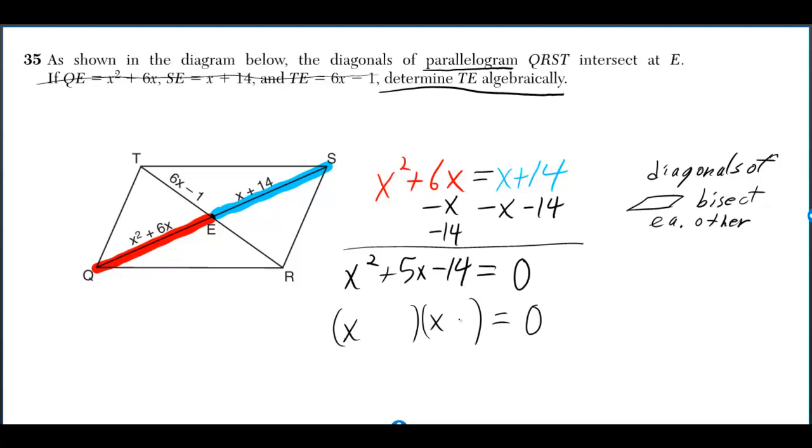Now we can set up double parentheses and look for two numbers that multiply together to give you negative 14 and add together to give you 5. We can first figure out the sign has to be positive times negative. It's the only way you can multiply together to get a negative.